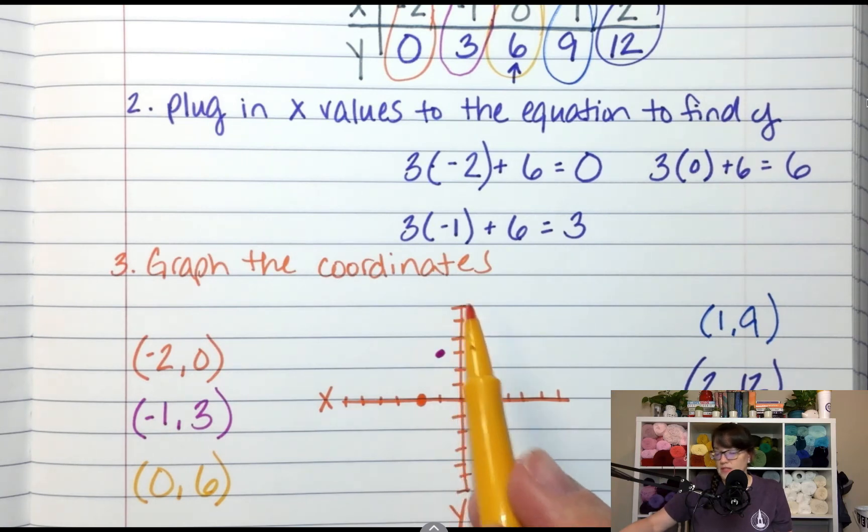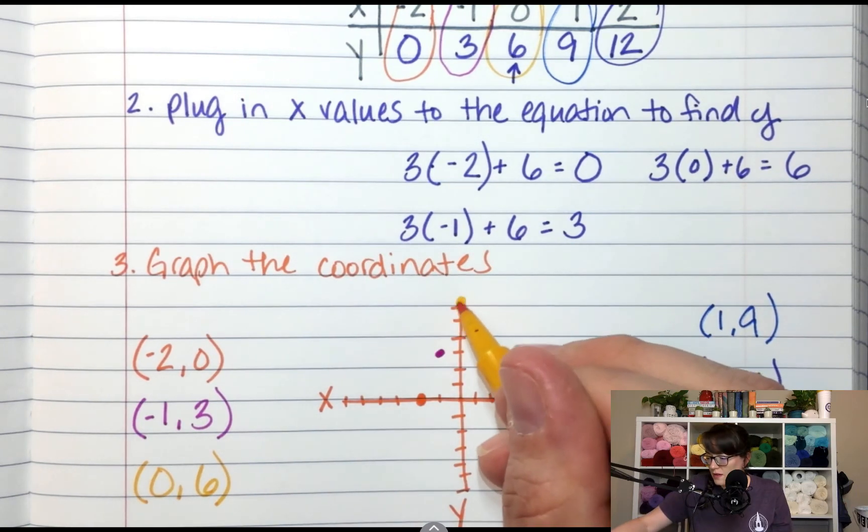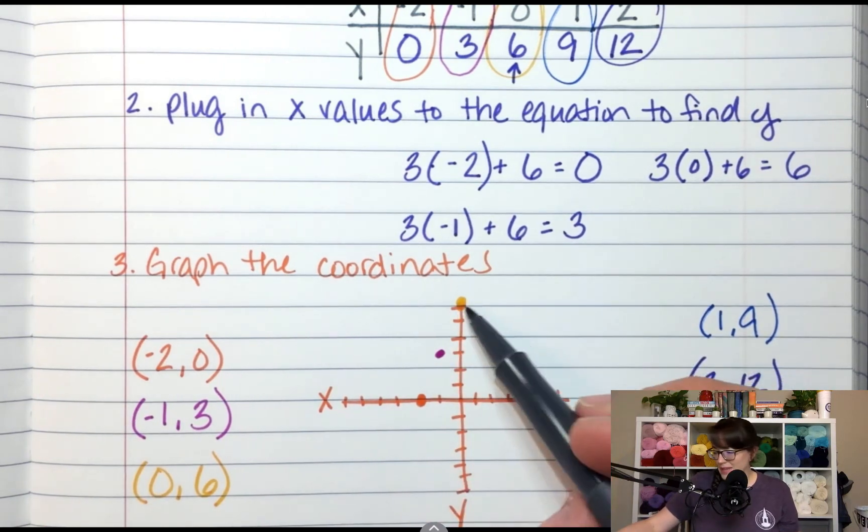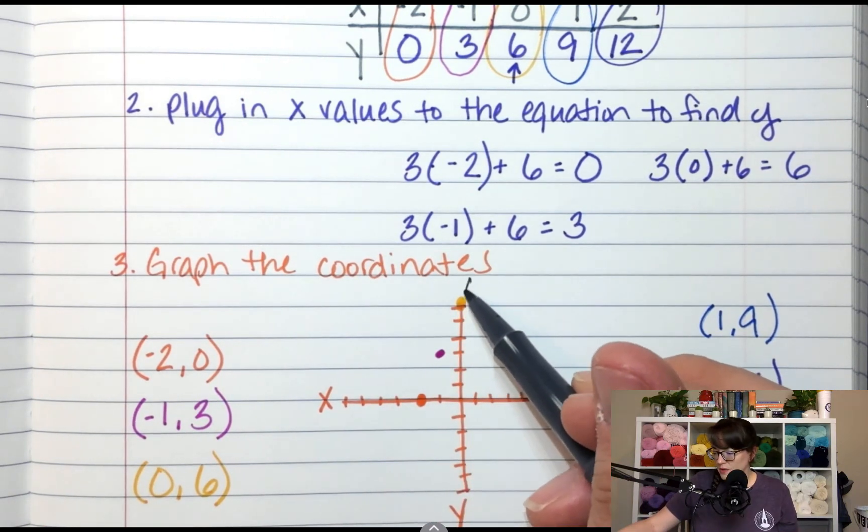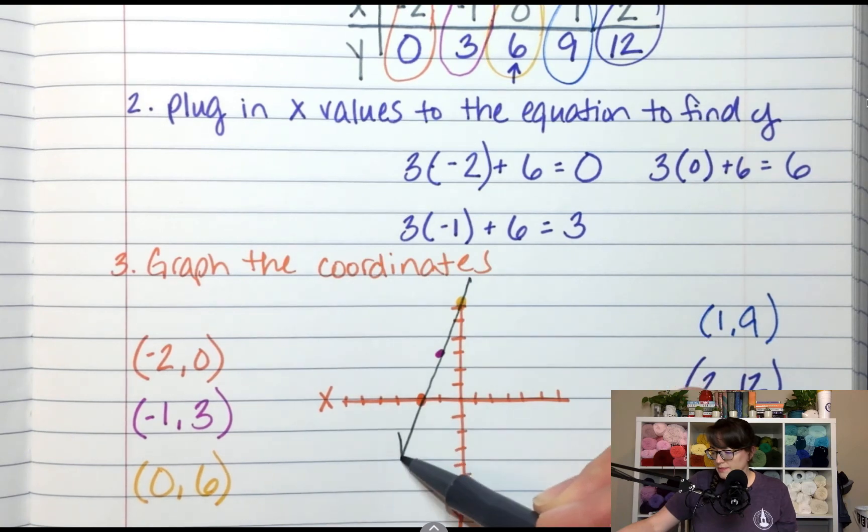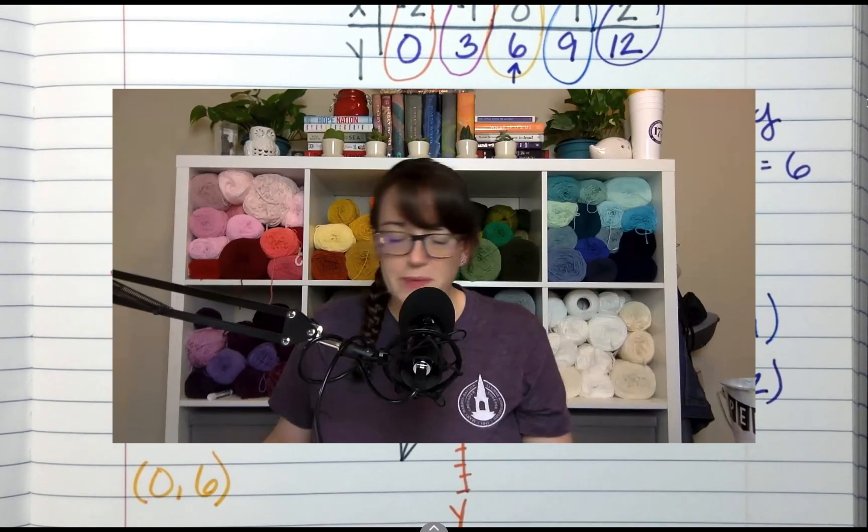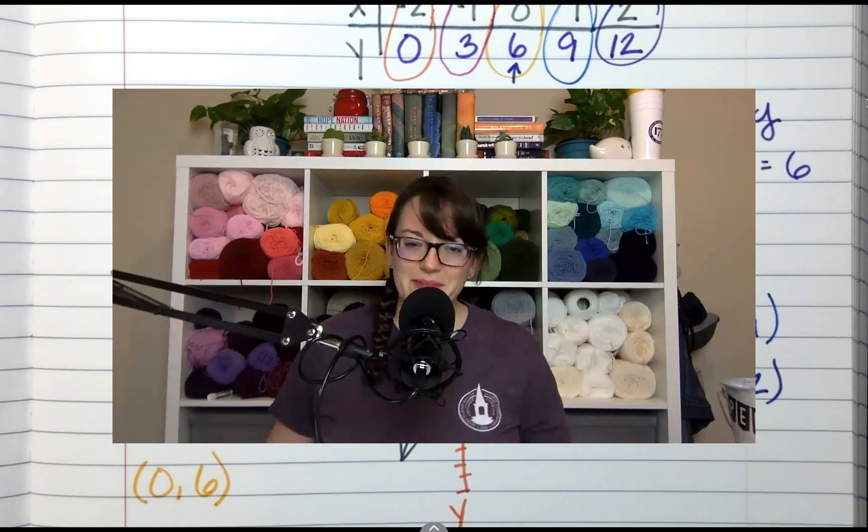And I'm going to stop there because I'm at the end of my little graph. But also because I have my y intercept and I have enough to show my slope. So there's my line. All right. That's pretty much it. So good luck. See you guys next time. Bye.